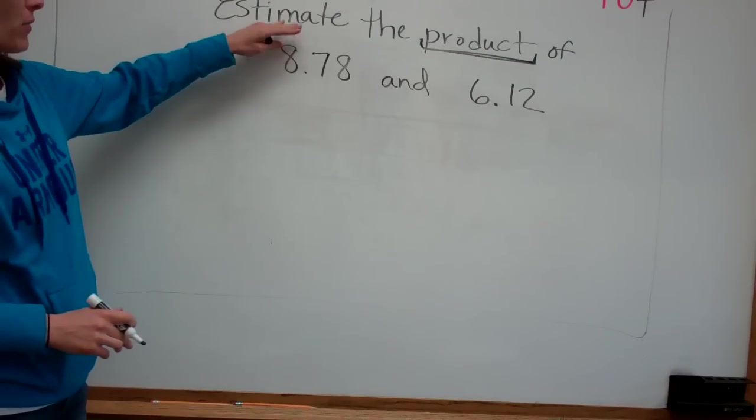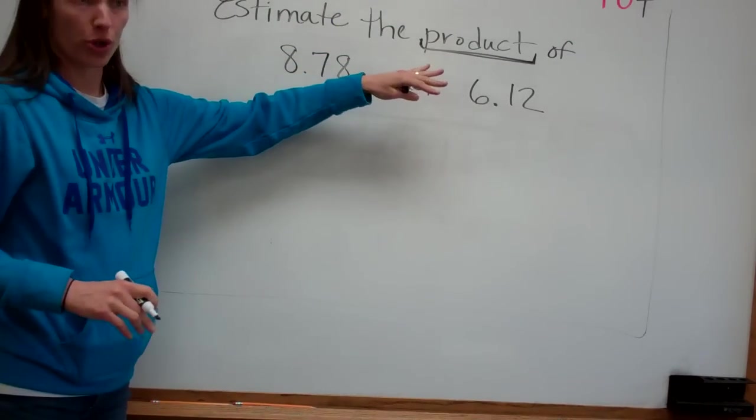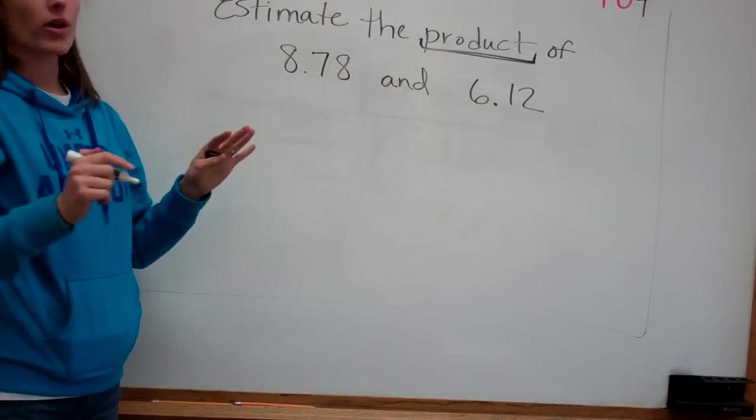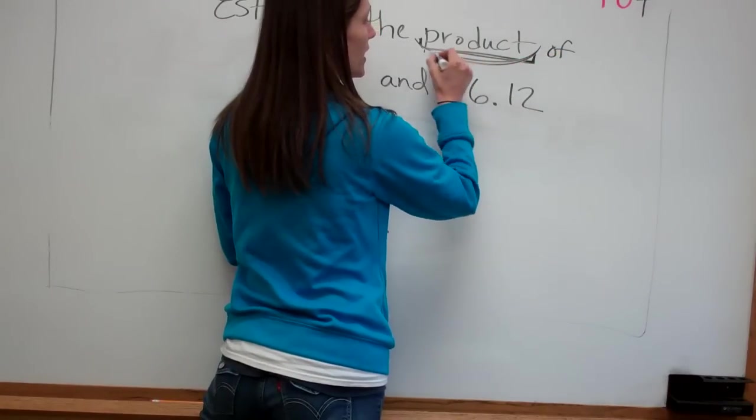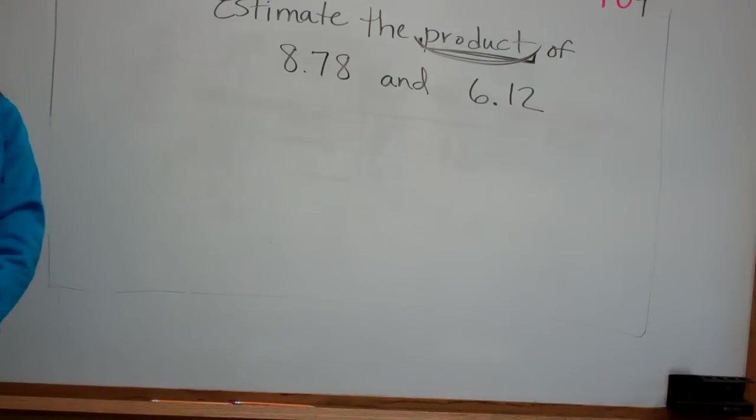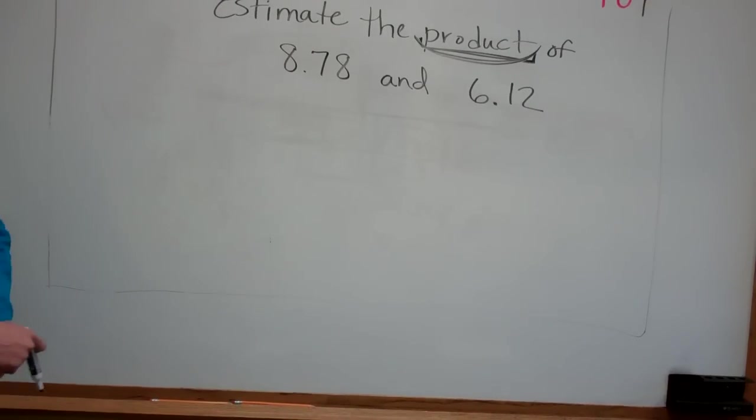They're asking you to estimate, which means round the numbers before you work it. But when we work it, what are we trying to find? The multiplication answer. The multiplication answer because it says product. Does everybody see that? Okay.